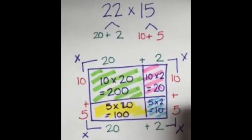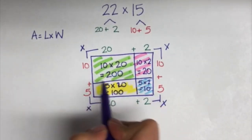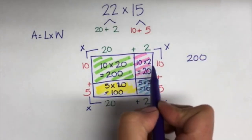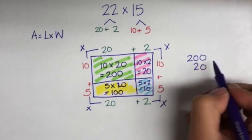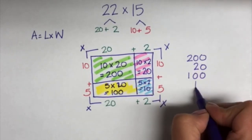Now that we have completed multiplication, we are left with 4 answers called partial products: 200, 100, 20, and 10. They are called partial products because they are only part of our final product. Now we will move on to adding the 4 partial products together to end up with our final product for 22 times 15. You will see here that I am copying down each answer from each colored section to the right side of my model.